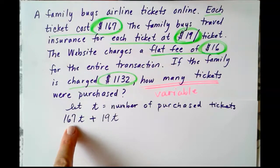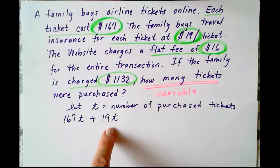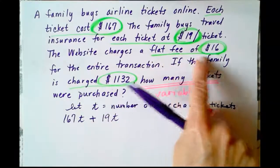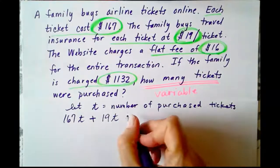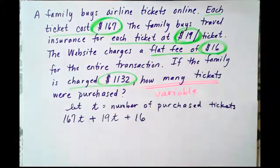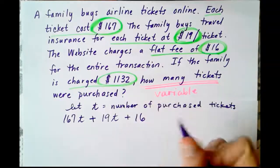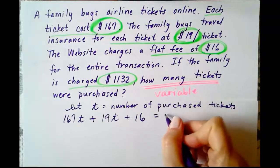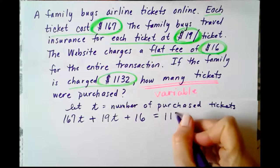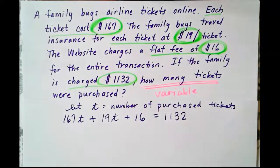So once again, if T is the number of purchased tickets, then 19 times T is going to represent our travel insurance. So this is the amount just for the tickets. Then we're adding on the travel insurance. And then we also have a flat fee, one-time fee of $16. Not for every ticket, but just one time, we're going to pay $16. And then the total of the whole purchase, we're adding everything together, is $1,132. So this is our equation based on the information that's given in the problem.